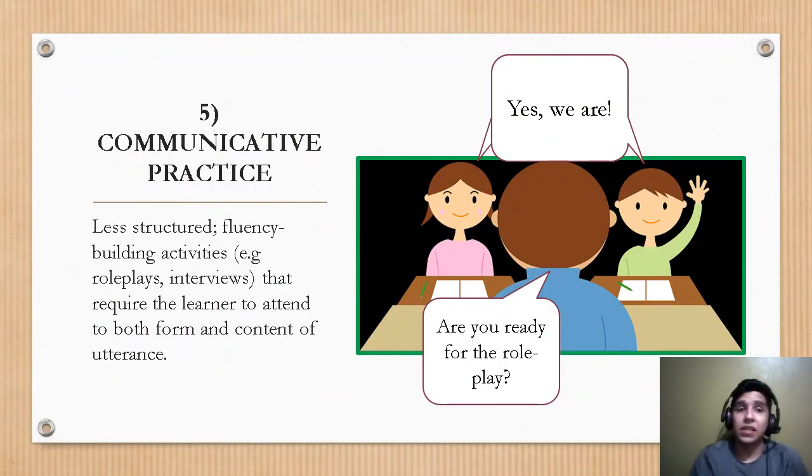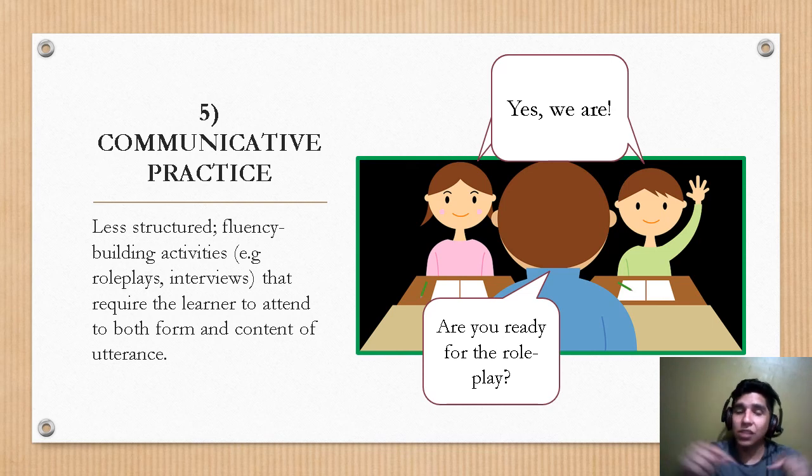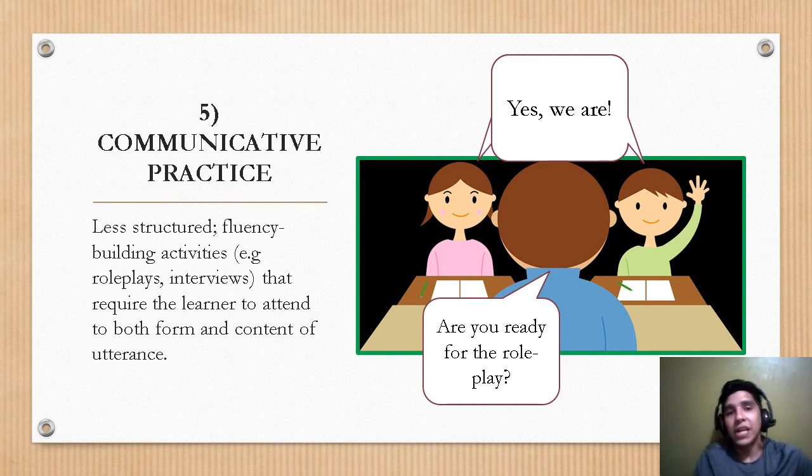Last but not least, communicative practice. This is less structured, fluency building activities that require the learner to attend to both form and content of utterance. At this stage, activities strike a balance between form and meaning. And even in this stage, with all this that we are saying, the learner's attention should still be focused on the pronunciation of the target feature. Remember that all this is a process. So, the student in this stage, the stage number five, must put in practice all that they learn in the other four stages.